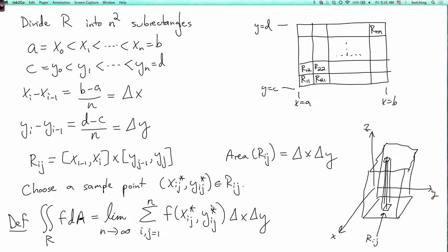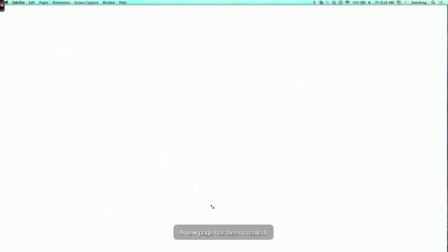So, the theorem, again, you can prove this in a real analysis class, the theorem is that if f is continuous, it's also true for many not-continuous functions f, but it's certainly true if f is continuous, then this double integral over R of f dA is well-defined. So, the limit exists, and it does not depend on which sample points you choose.